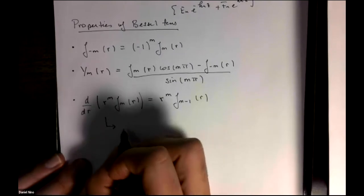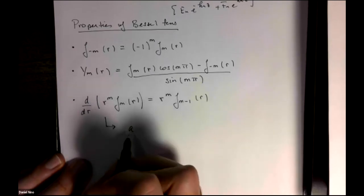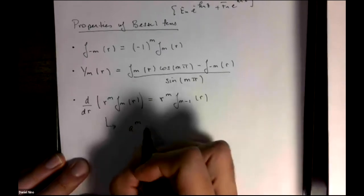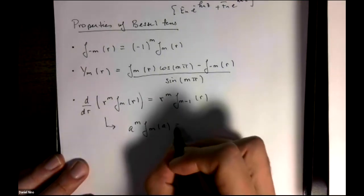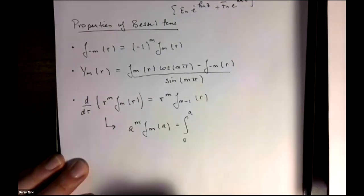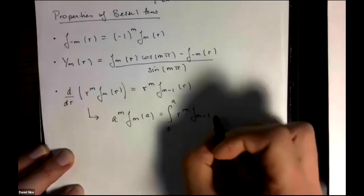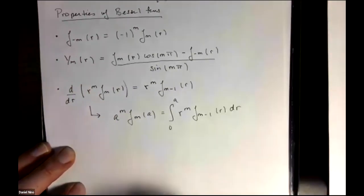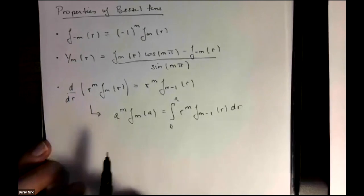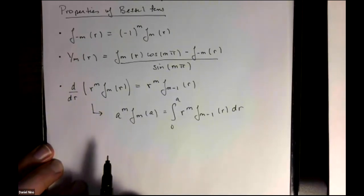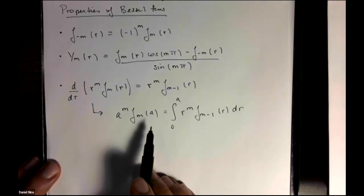The converse of this, by applying the fundamental theorem of calculus, is a to the m j m of a is equal to the integral from 0 to a of the Bessel function of order m minus 1 times r dr. And here we've substituted r by a because that's our upper limit of integration. So this is an important identity or result for Bessel functions.